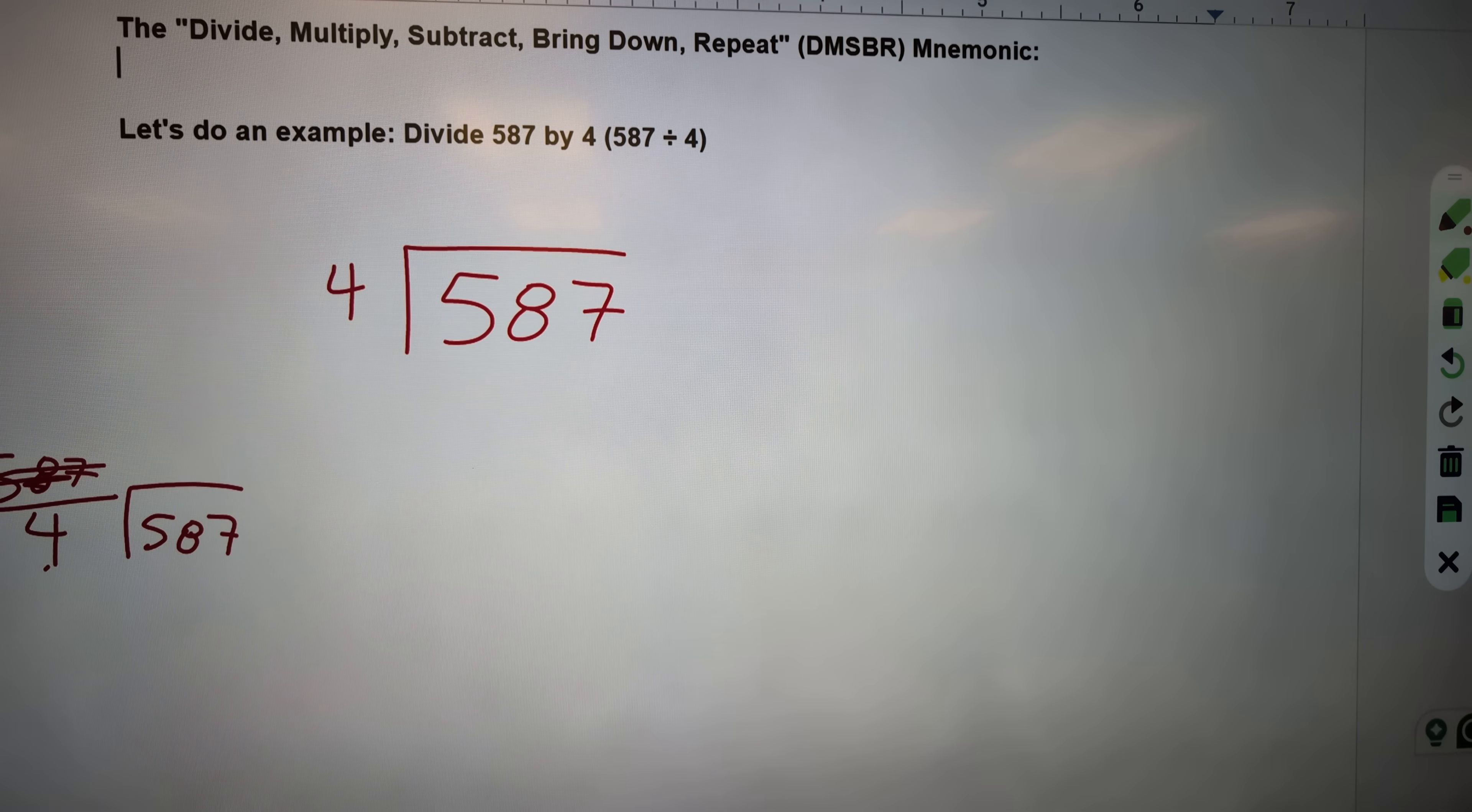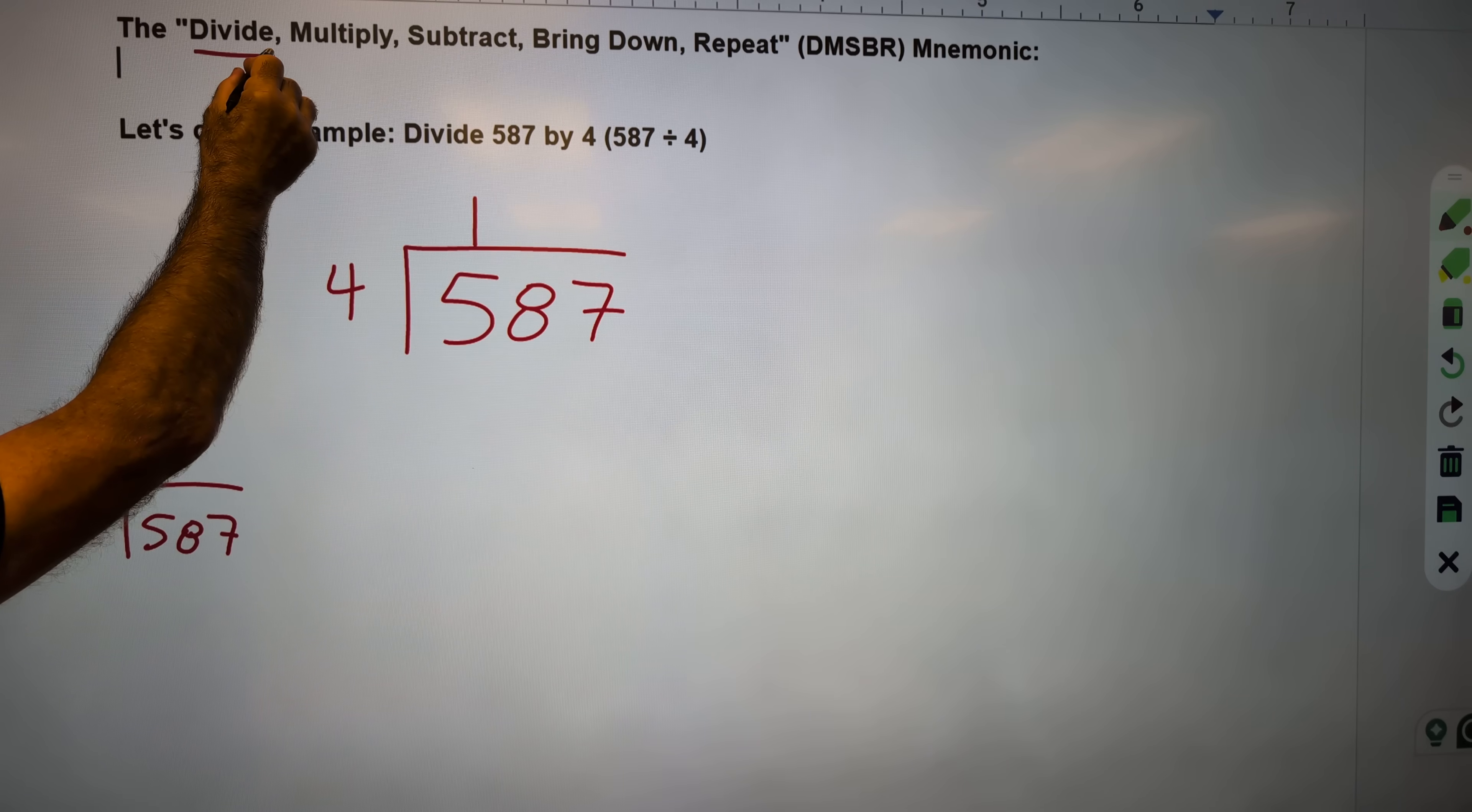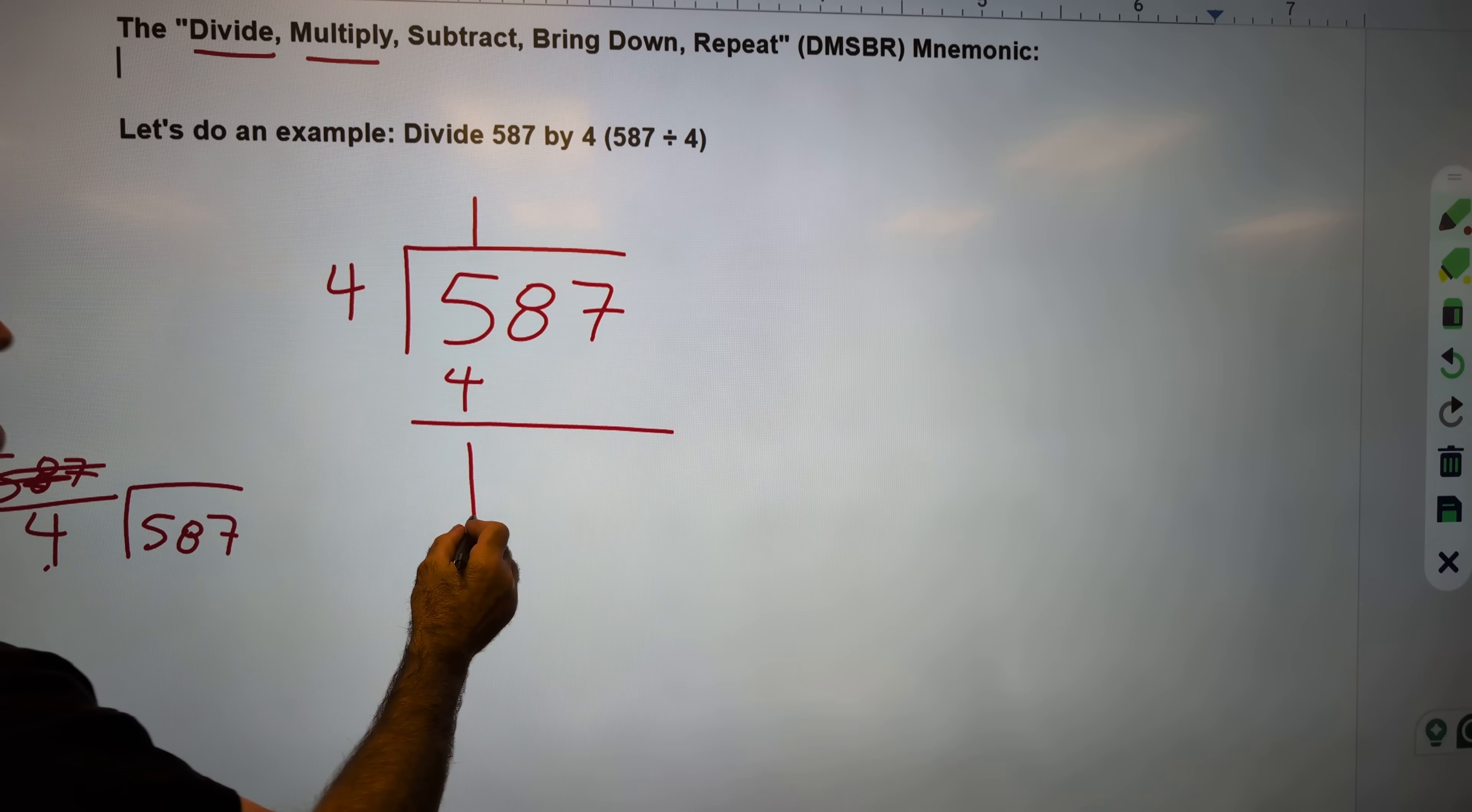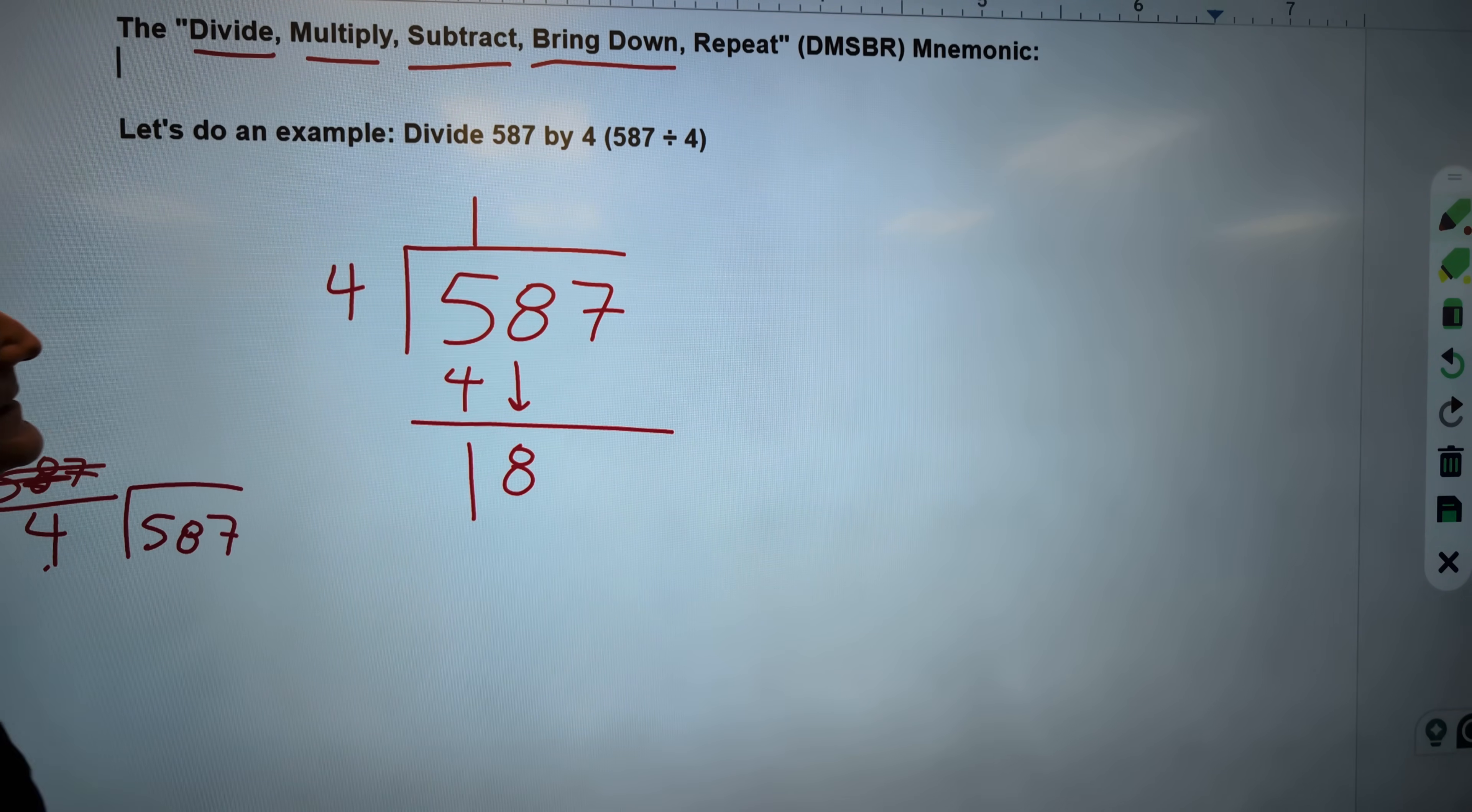So how many times does 4 go into 587? The first thing I'm going to do right here is divide. I'm going to see how many times 4 will go into that first digit. Well, 4 will go into 5 one time. So I did my divide. 4 times 1 is 4. There's my multiply. 5 minus 4 is 1. There is my subtract. Bring down - bring that 8 down. Eighteen. Repeat.